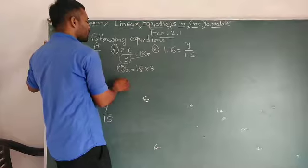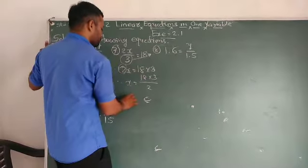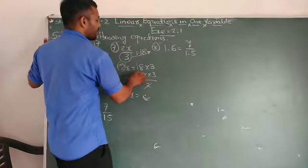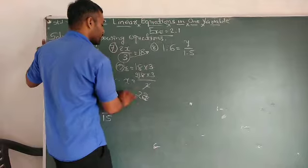2 is in multiplication, so converted into division. So x = 18 × 3 ÷ 2. 2 nines are 18, 9 threes are 27.